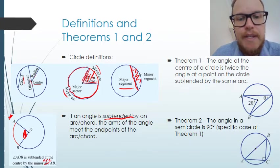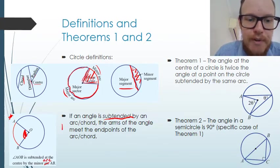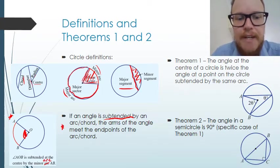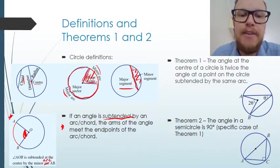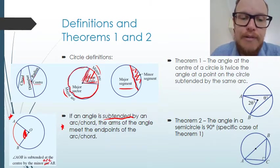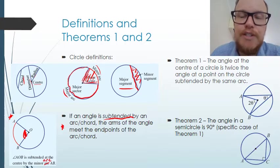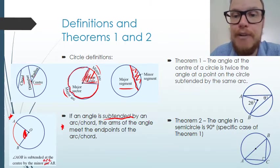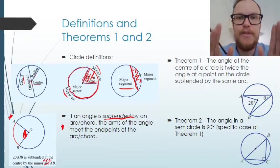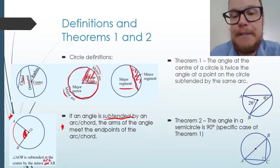The definition says that if an angle is subtended by an arc or chord, the arms of the angle meet the end points of the arc or chord. So it's the relationship between the arc or chord and the angle that makes the two radii come out to meet it.